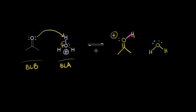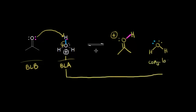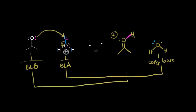Identifying our conjugate acid-base pairs again: on the left, hydronium H3O+ is functioning as our Bronsted-Lowry acid. Take a proton away from that, and you're left with the conjugate base — on the right, that would be water, which is our conjugate base. On the left, acetone is functioning as a Bronsted-Lowry base, so on the right, this must be the conjugate acid.